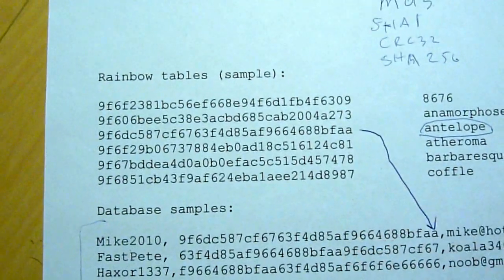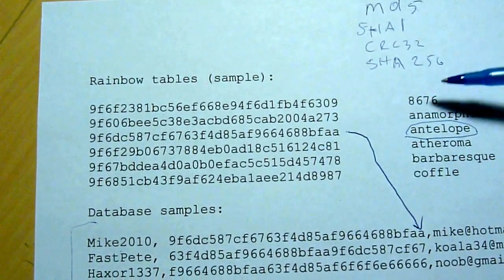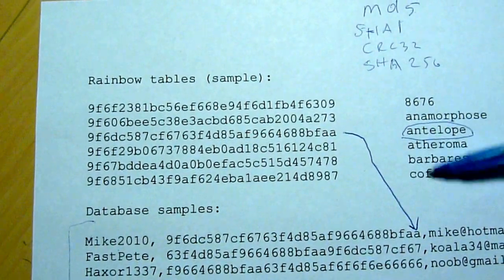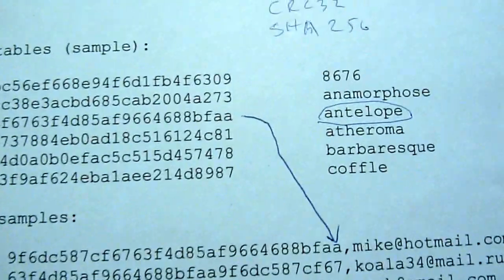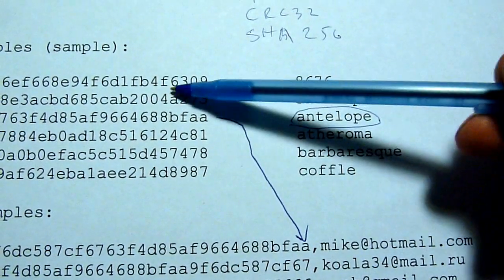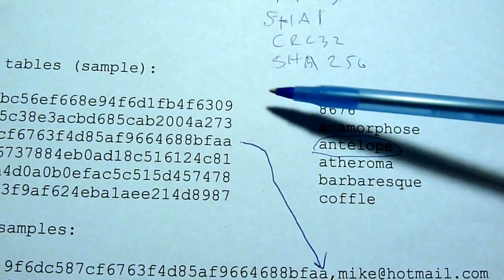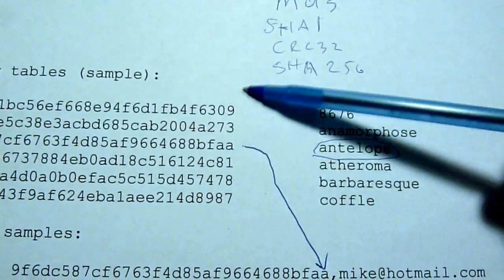But this is where rainbow tables come in. Rainbow tables are pre-calculated hashes for different data. So the hackers would take, let's say, English dictionary, and they will go through every word, and they'll calculate the hash of every word, and they'll store it in the database. So now they'll have a pair of hash and the password for every word.